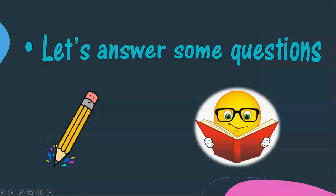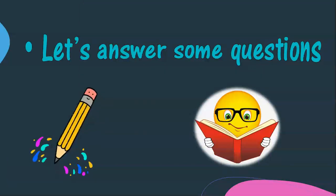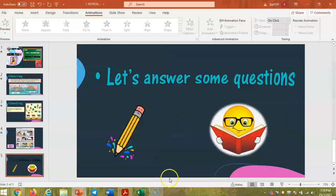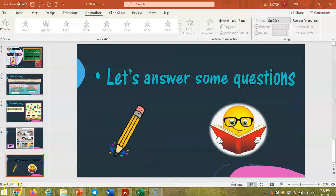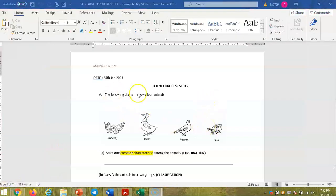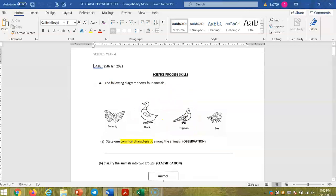Okay class, I hope you are clear with observing and classifying. Okay, and let's answer some questions for today's lesson. You can look at the worksheet. Okay class, this is the lesson for today, the activity for today. Okay, for the first question is you are given four types of animals here.